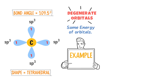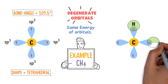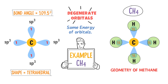An example of SP3 hybridization is methane, CH4. Carbon has four unpaired electrons in its SP3 hybrid orbitals. According to valence bond theory, unpaired electrons form covalent bonds. So four hydrogen atoms each share their single valence electron with one hybrid orbital of carbon, giving us CH4. This is the shape and geometry of methane, in which carbon has SP3 hybridization.